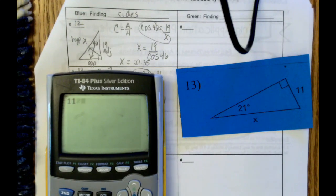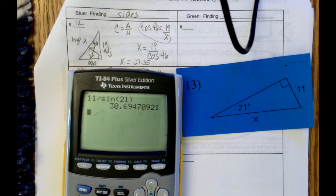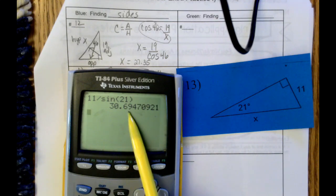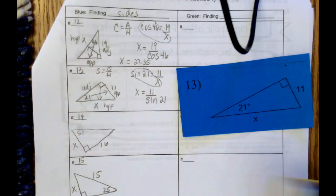11 divided by sine of 21. Just checking here, and we get 30.694. We're looking at the 4 to determine what to do to the 9. Since 4 is less than 5, we're going to keep 30.69.